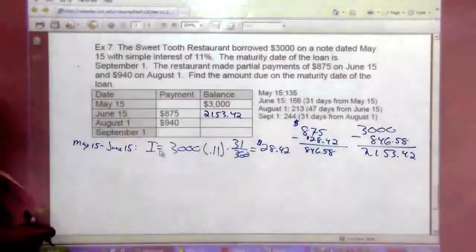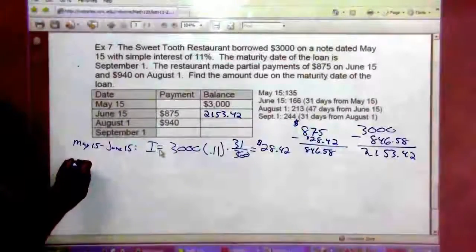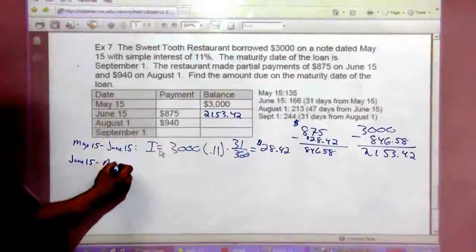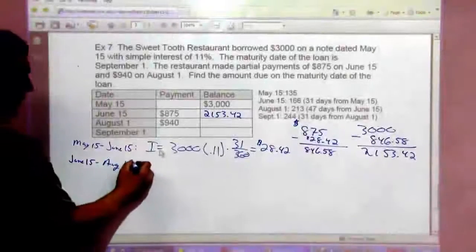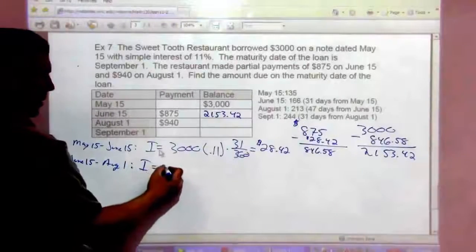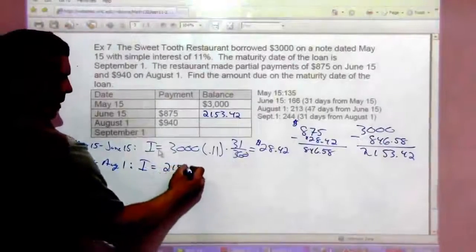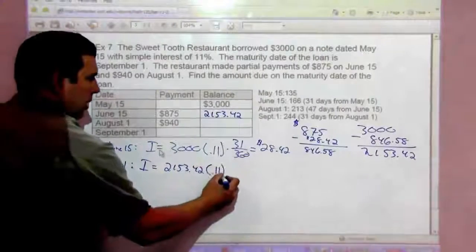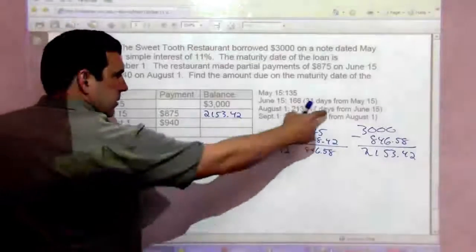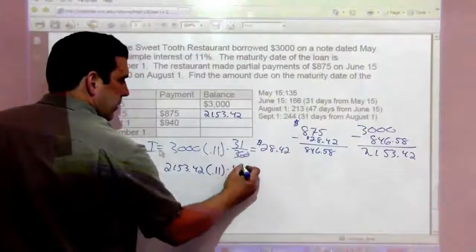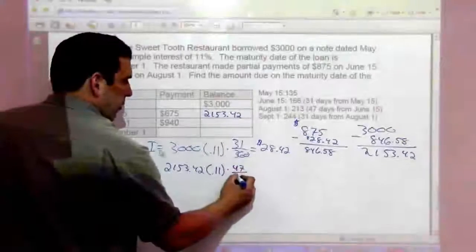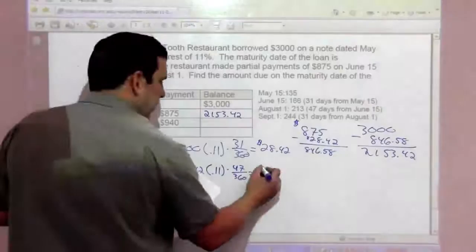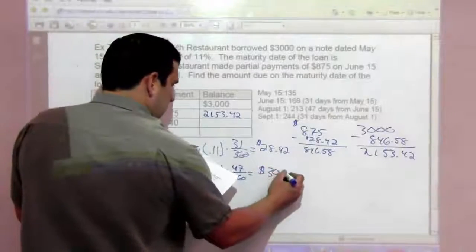Now another partial payment is made on August 1st, so we're looking from June 15th to August 1st. The interest is going to be $2,153.42, the current balance, times the 0.11 times how many days? 47 days, 47 over 360. That gives us an interest amount of $30.93.